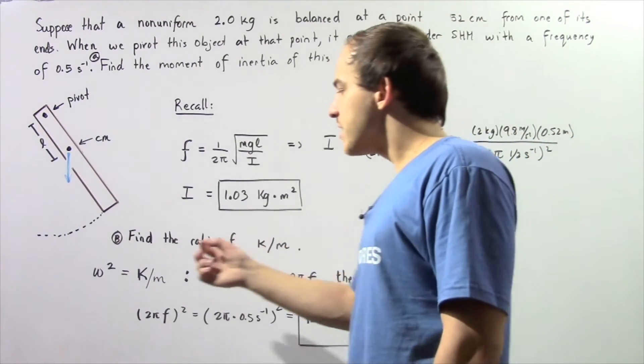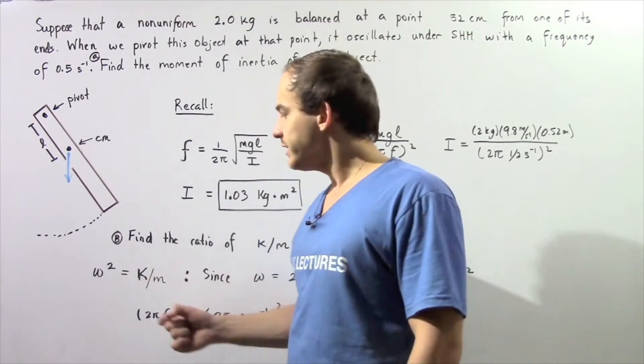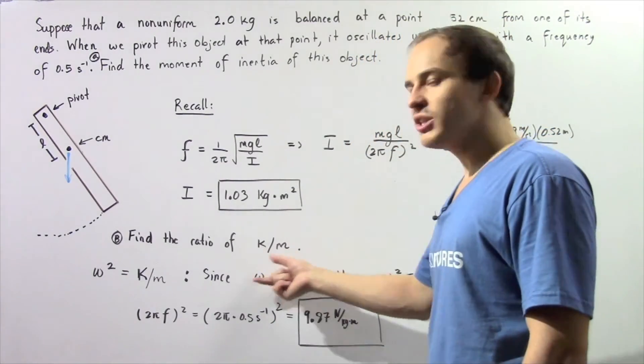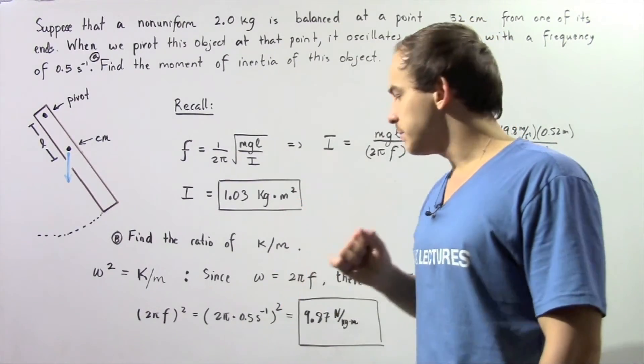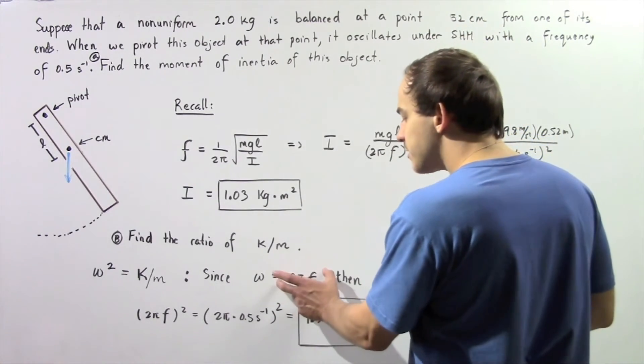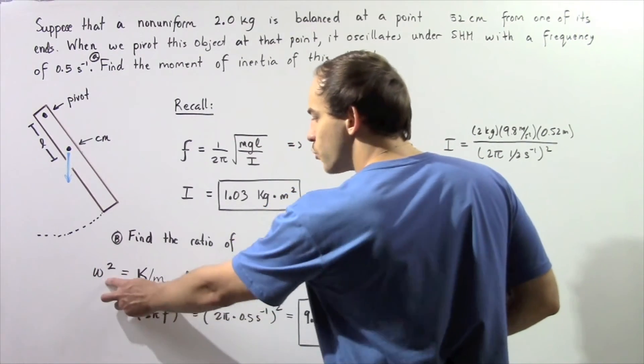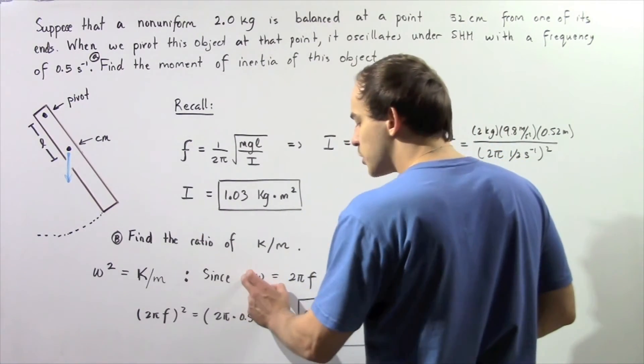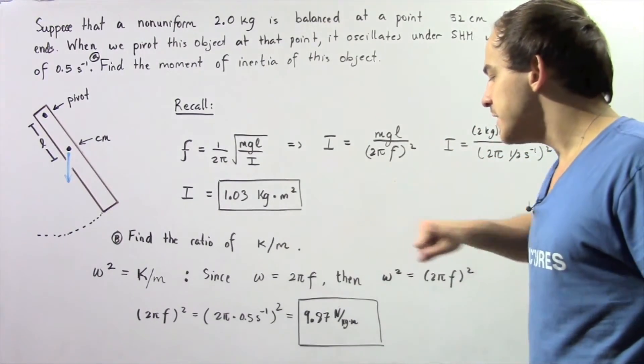Recall that if we take our angular frequency and square that, we'll get our k divided by m ratio. We also know the following relationship: our angular frequency is equal to 2π multiplied by our regular frequency. So if we square this quantity, that means we're going to calculate what the angular frequency squared is. And if we square this side, we get the ratio k divided by m. So we know what the frequency is.